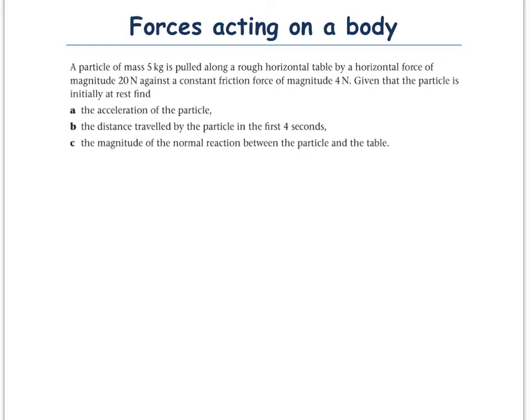Let's highlight the key points. Mass is 5 kilograms. Now, the words 'rough horizontal table' are very important. If it says rough, it means you've got to include the force of friction. If it says smooth, you can assume there's no friction. So that's really important — read the question carefully. The horizontal force is 20 newtons and the friction is 4 newtons. So let's draw a quick diagram to represent this question.